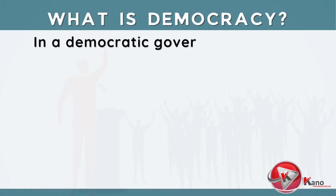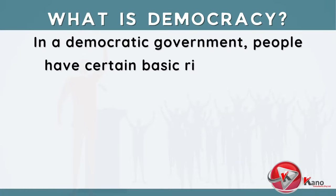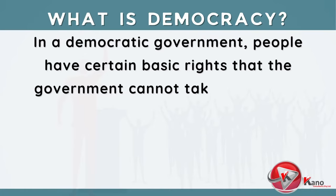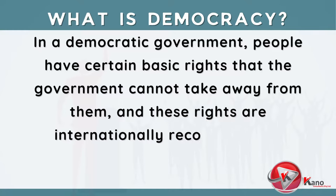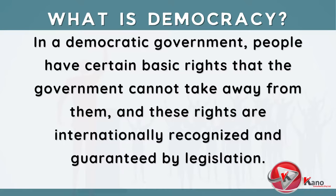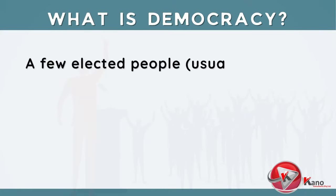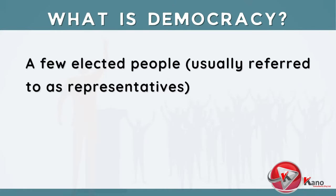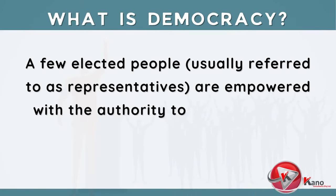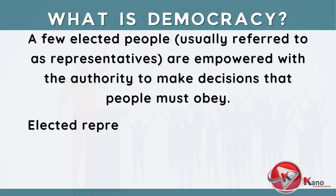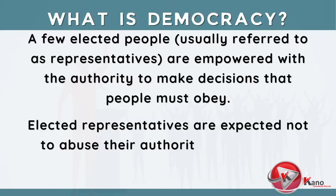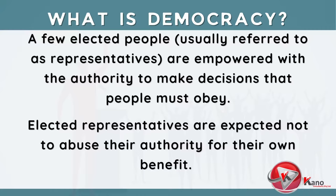In a democratic government, people have certain basic rights that the government cannot take away from them, and these rights are internationally recognized and guaranteed through legislation. A few elected people, usually referred to as representatives, are empowered with the authority to make decisions that people must obey. Elected representatives are in turn expected not to abuse their authority for their own benefit.